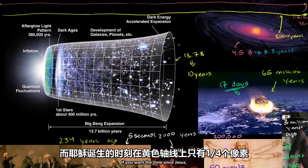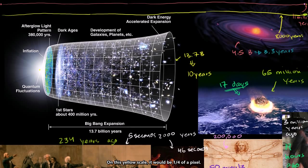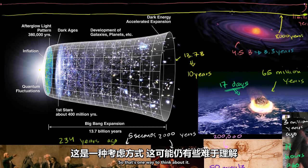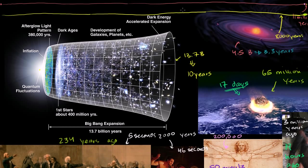If you want the time since Jesus, it would be 1/4 of a pixel on this yellow scale, and the amount of time since the Declaration of Independence would be an even more minuscule amount of time. So that's one way to think about it, but these timelines to some degree also don't do justice.